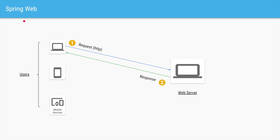Spring Web is one of the projects in the Spring Boot umbrella. In this project it allows us to create a web server wherein multiple devices or multiple users can send requests to our web server, and the web server can handle those requests and send the appropriate response.